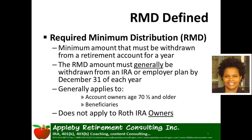So the first question becomes, what is a required minimum distribution? By definition, a required minimum distribution is a minimum amount that must be withdrawn from a retirement account for a year. Until an individual reaches age 70 and a half, distributions are usually optional — and I'm emphasizing usually because there are usually some exceptions. Generally speaking, if an RMD or required minimum distribution is due for a year, it must be withdrawn by December 31st of the year for which it is due.